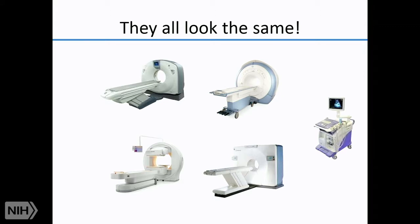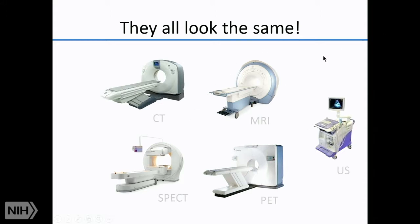One thing you'll notice as you walk around a radiology department is that, with the exception of ultrasound, these machines all look superficially about the same — they have a gantry and a donut shape where the imaging takes place. The reason they all look similar is that they're all tomographic, meaning they cut the body in planes. The geometry is such that the circle is the best way to accomplish that.